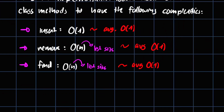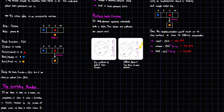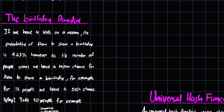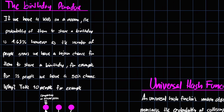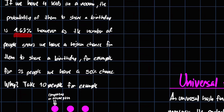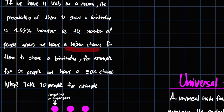Now let's understand why we can't really find a perfect hash function — this brings us to the birthday paradox. I'll link a VSauce video explaining it in depth, but here's a quick overview. If we have four kids in a room, the probability of two sharing a birthday is only 1.63%. However, as the number of people grows, the chance increases — for 23 people, there's already a 50% chance.